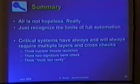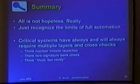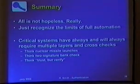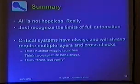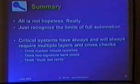To summarize: it's not all as hopeless as it sounds, but you have to recognize the limitations of full automation. Critical systems always have multiple layers and multiple checks — think about how nuclear weapons release authentication is designed, probably the highest-assurance authentication process on the planet. Also, two-signature bank checks and similar layered approaches add assurance. The best fraud detection tends to be built into applications that look at behavior patterns. It's nice to verify the right person is using a credit card, but that's only part of it. Essentially: trust but verify.